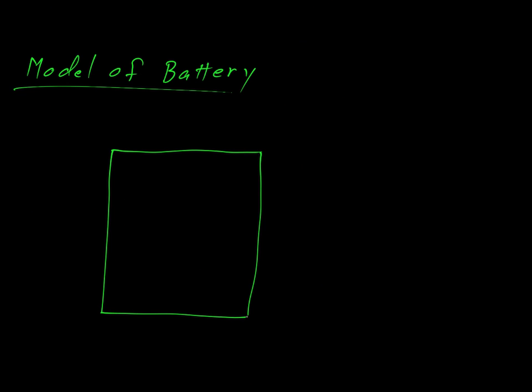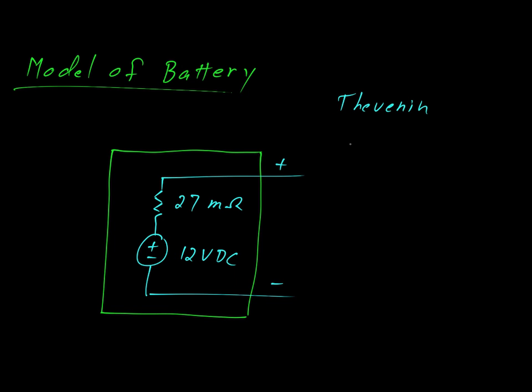Next, let's look at the model of the battery. So our battery, well at first glance it's a black box. All we know is that it has a positive terminal and a negative terminal. But we can model this as an internal resistance in series with an ideal voltage source like so. This resistor came from the datasheet. It has a resistance of 27 milliohms, and this power supply has 12 volts DC. You may recognize this as the Thevenin equivalent circuit.